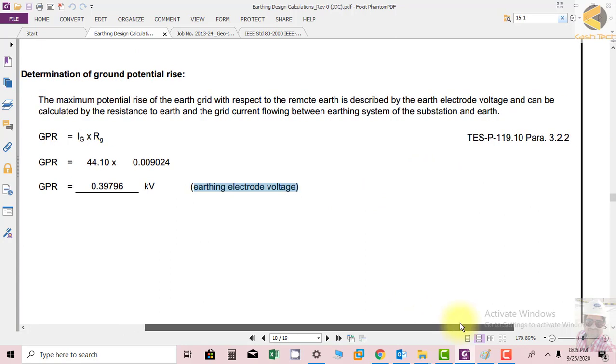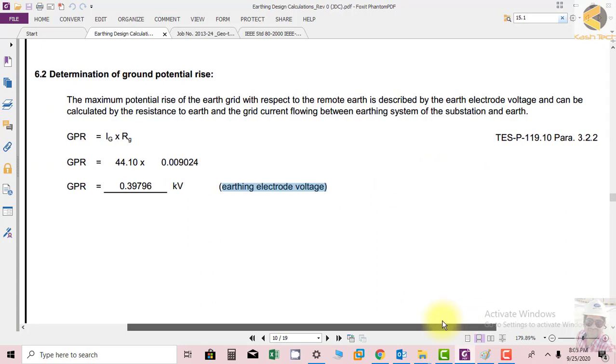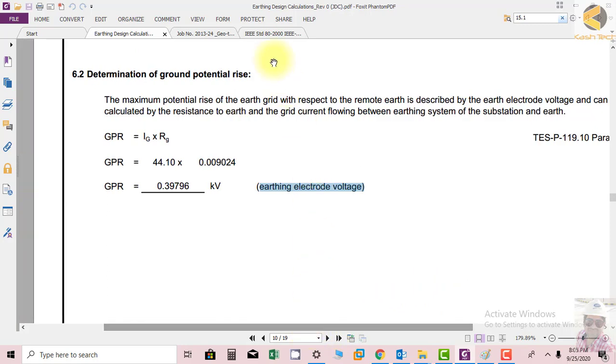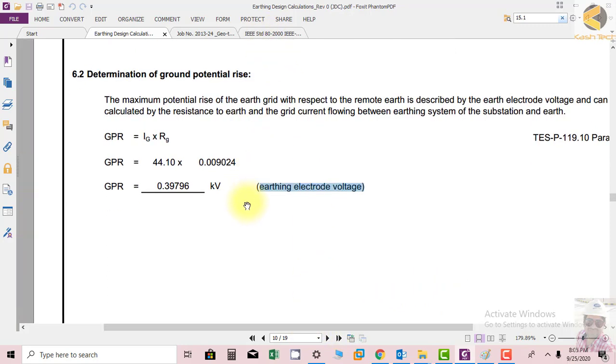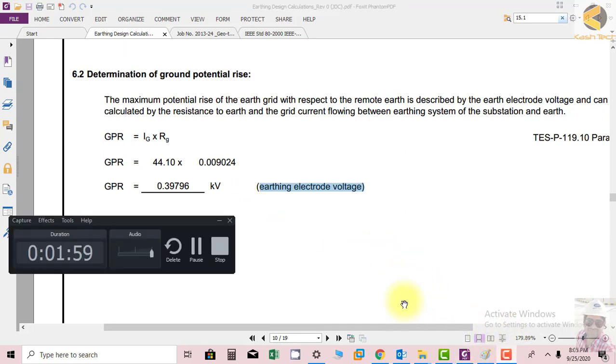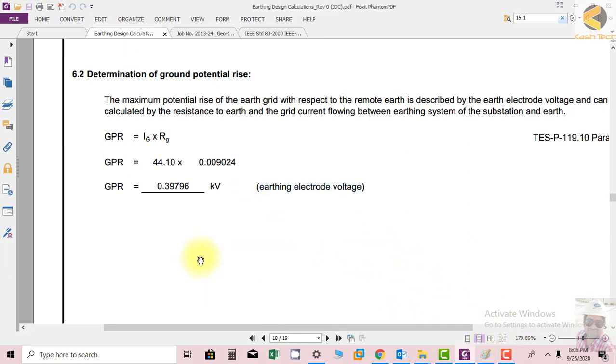This formula is taken from TES-P-119.10. You will also find this formula in IEC standard. The ground potential rise should be as much less as possible.